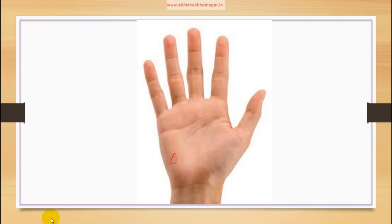If one line is in the middle of this and going like this, that indicates that you have suffered in childhood, but with your efforts you will become rich and get a social status.